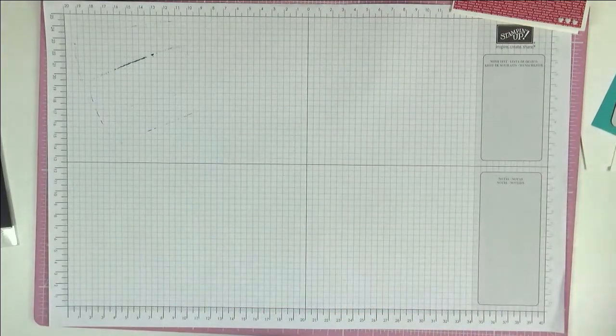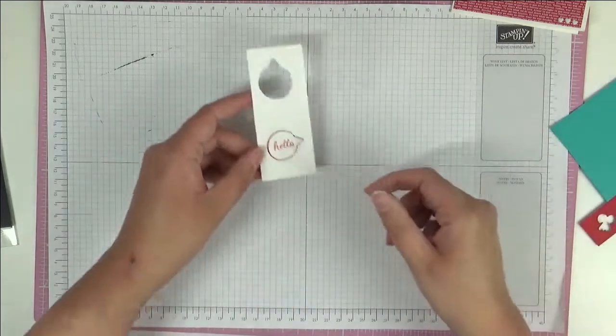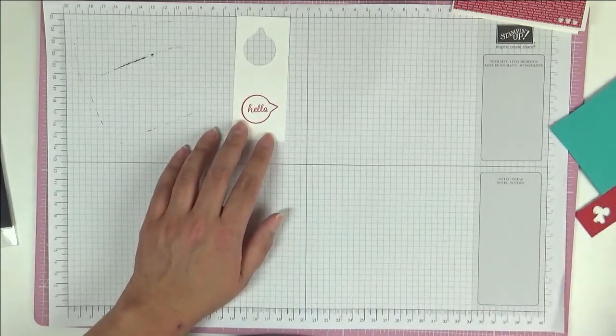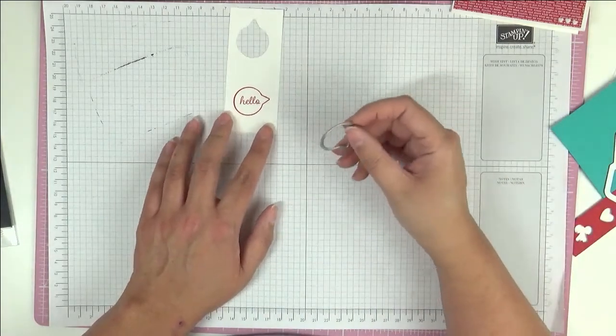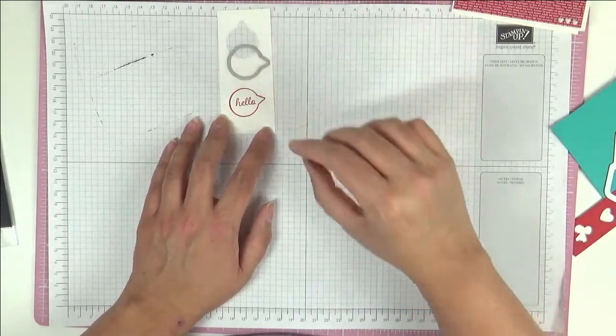So as I said, I stamped, as you can see here, speech bubble with a little hello and then I was going to start to die cut when I realized I hadn't switched the camera on. So that die goes with that.